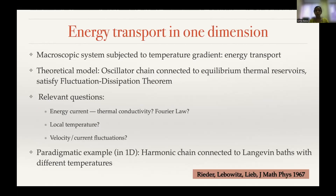Whenever we talk about energy transport in one dimension, we typically have a picture in mind: there's a microscopic system subjected to a temperature gradient and energy or heat is flowing through the system. A simple theoretical model for such a phenomenon is a chain of oscillators connected to two equilibrium thermal reservoirs at the two ends with two different temperatures. The reservoir being in equilibrium means the connections must satisfy the fluctuation-dissipation theorem at each end.